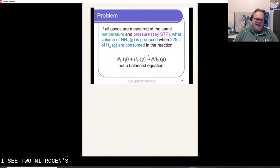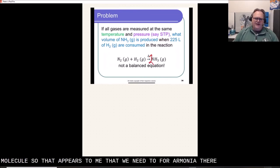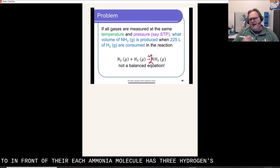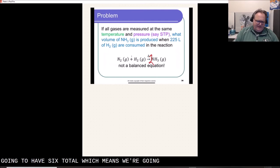I see two nitrogens on the reactant side, but only one nitrogen in an ammonia molecule. So that appears to mean that we need two for our ammonia there. Once we put that two in front of there, each ammonia molecule has three hydrogens. That means we're going to have six hydrogens in total, which means we're going to need a three here. And now we have a balanced equation.